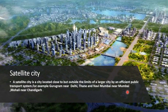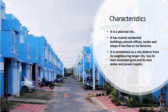What exactly is a satellite city? A satellite city is a city located close to, but outside the limits of, a larger city, connected by an efficient public transport system. Examples include Gurugram near Delhi, Thane and Navi Mumbai near Mumbai, Mohali near Chandigarh, and Rajarhat in Kolkata — all are satellite cities.